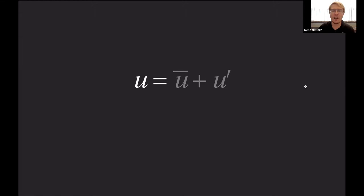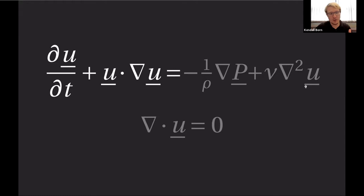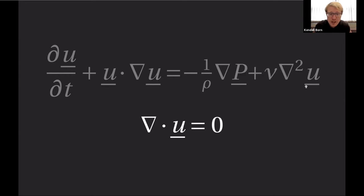We separate the fluctuations from the mean flow. The mean flow is denoted by U-bar, and the fluctuation has a prime. In the Navier-Stokes equation, the important term causes turbulent stresses; we also have isotropic stresses from the pressure and viscous stresses. The continuity equation states that the amount of fluid flowing into the system must equal the amount leaving — it's essentially a conservation of mass equation.